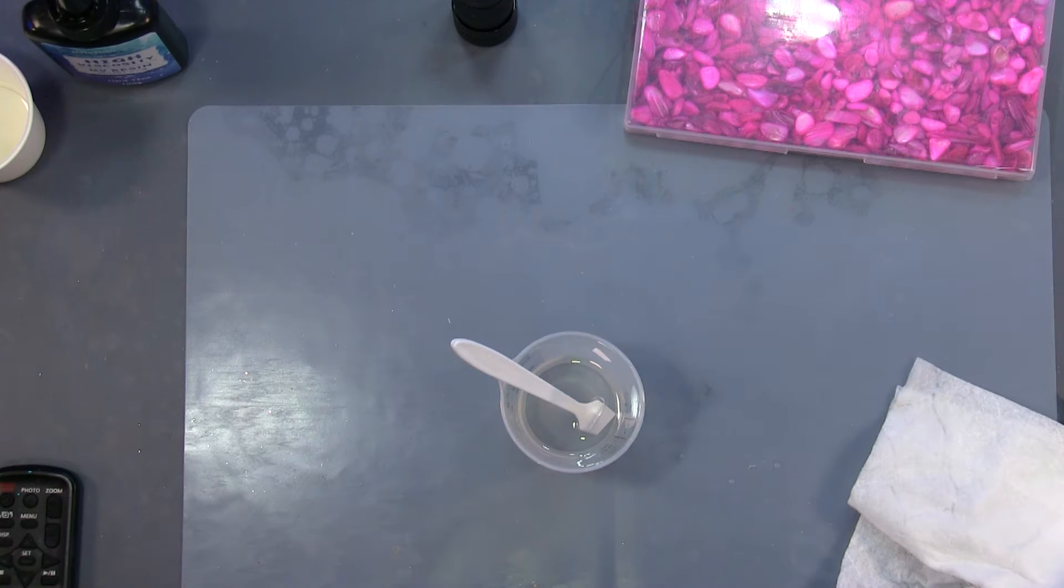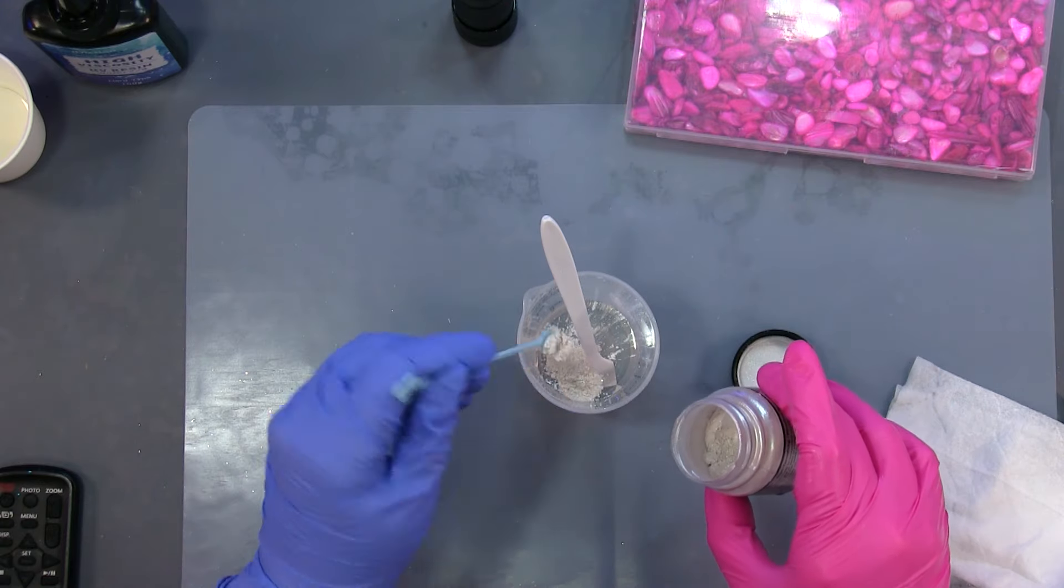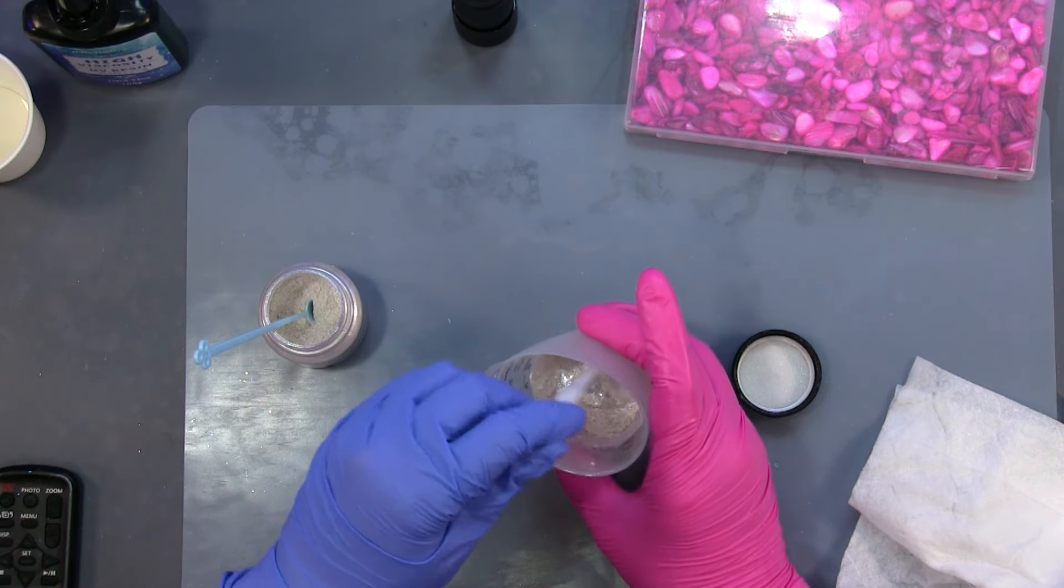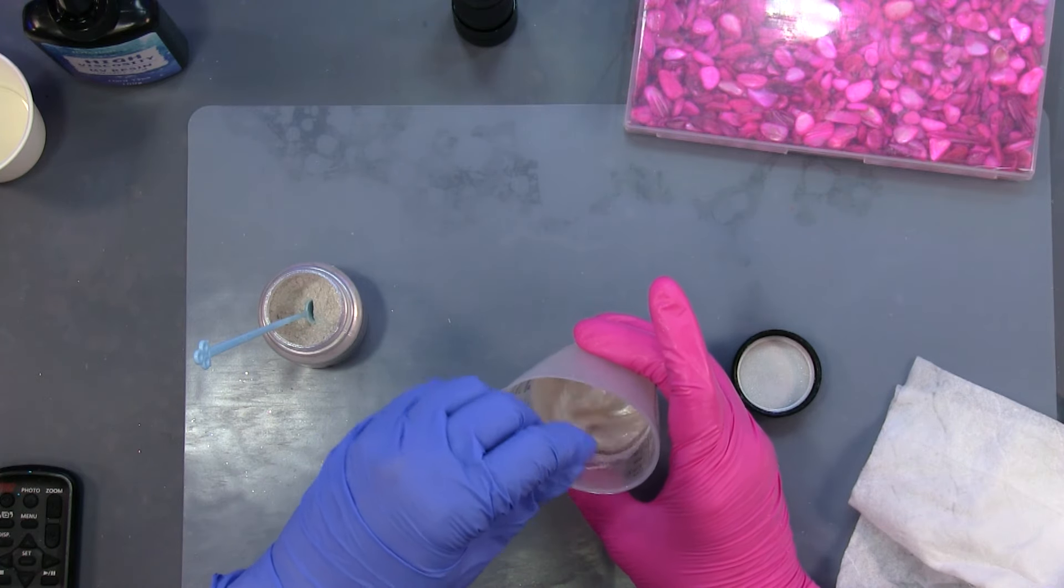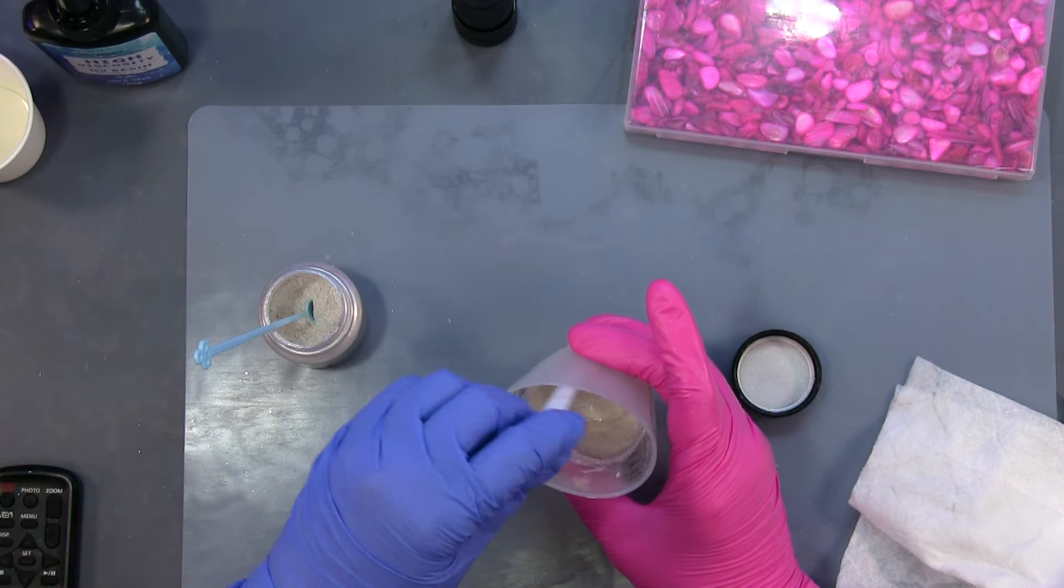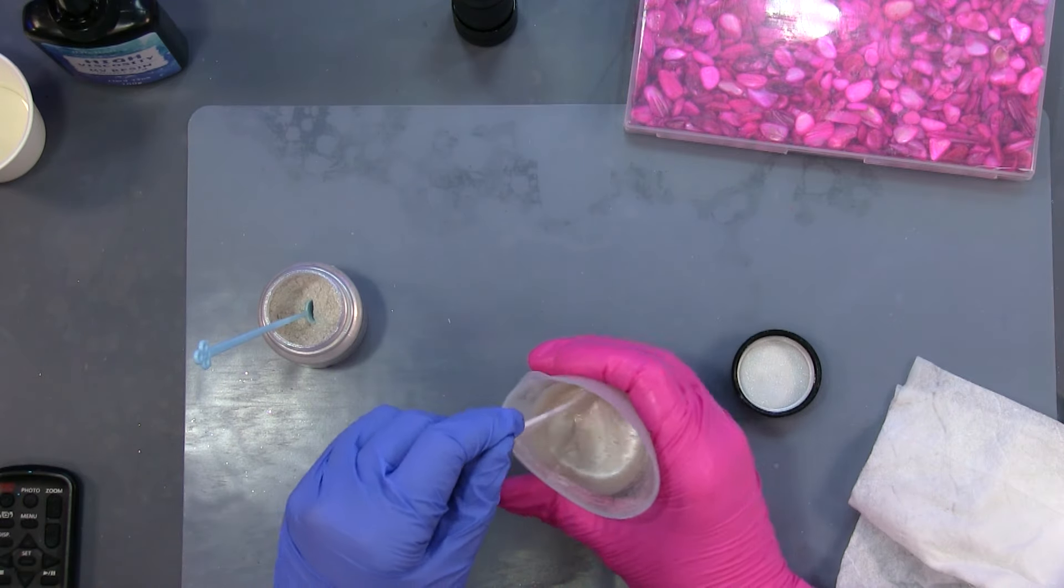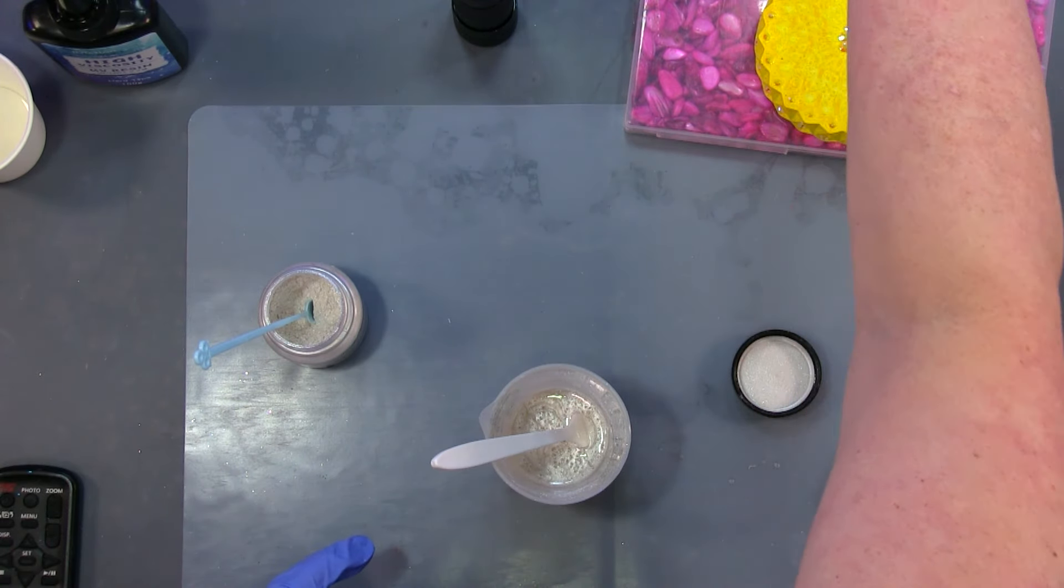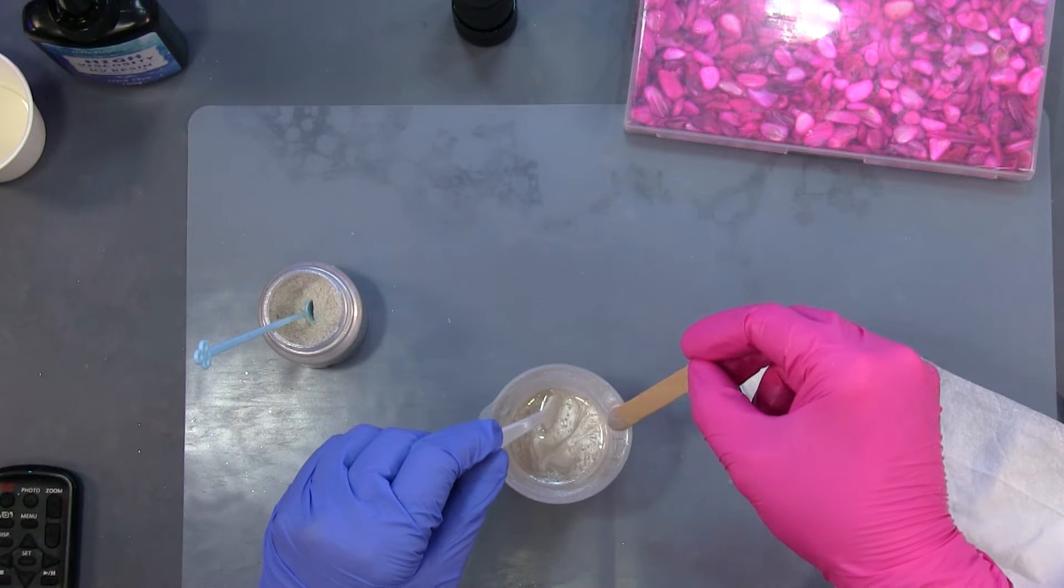Okay, while that cures in there, I'm going to take some of this mica powder. I'm going to mix in some mica powder, the pearl white. That should be enough. A good way to check is I'm going to get a little stick here. Yeah, that looks good.